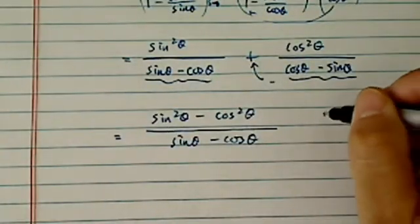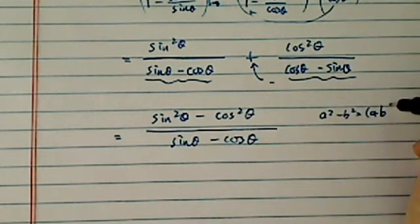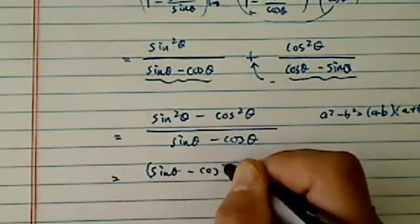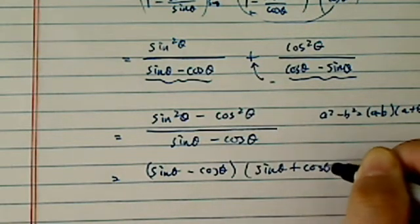This one is a difference of squares. I have a squared minus b squared. That's equal to a minus b times a plus b. That's exactly what I'll do. Sine theta minus cosine theta. And then I have sine theta plus cosine theta.